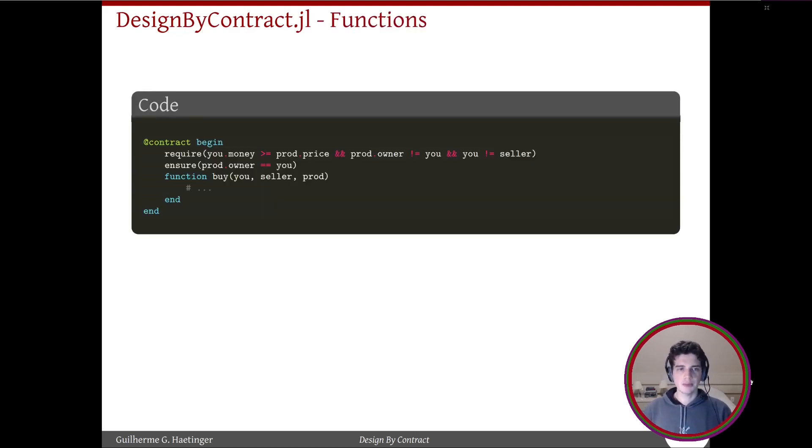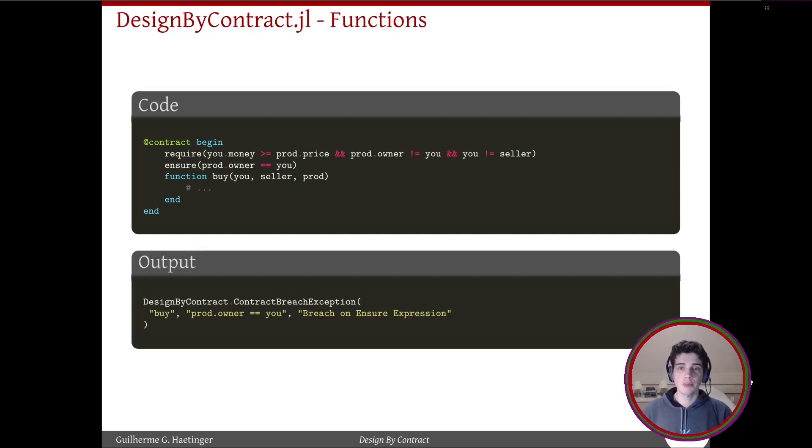Here's an example of a function contract. You use the contract macro and the ensure and require clauses to define conditions, and if one of them breaks, the contract breach exception is raised.